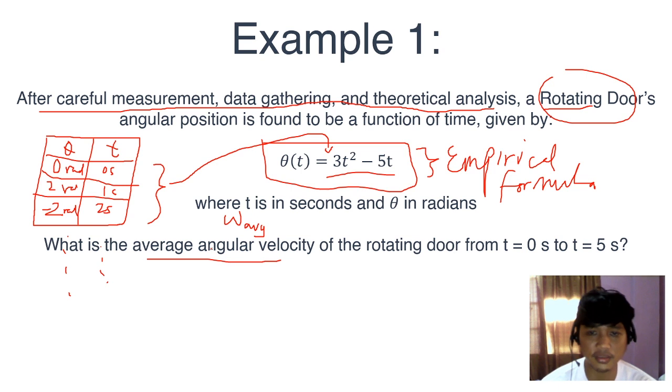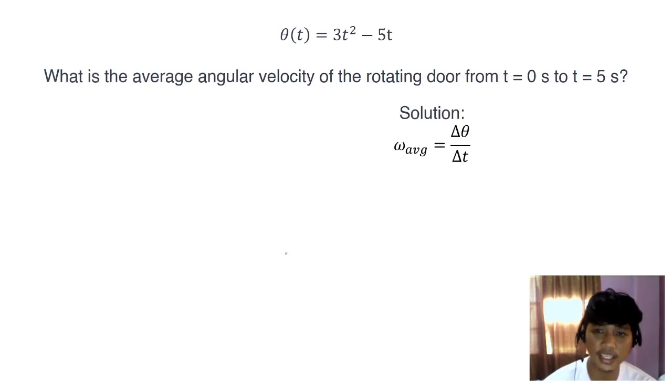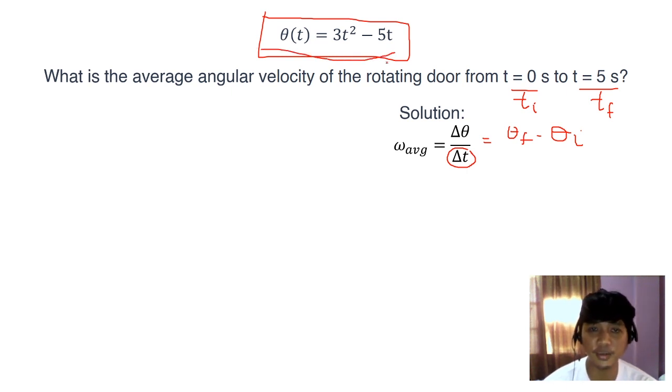Now it has meaning, not just some random equation. Let's get the average angular velocity from t equals 0 to t equals 5 seconds. T equals 0 is actually our initial time, and 5 seconds is our final time. Okay, we have the denominator, delta t. Our numerator is delta theta. What is our theta final and our theta initial?